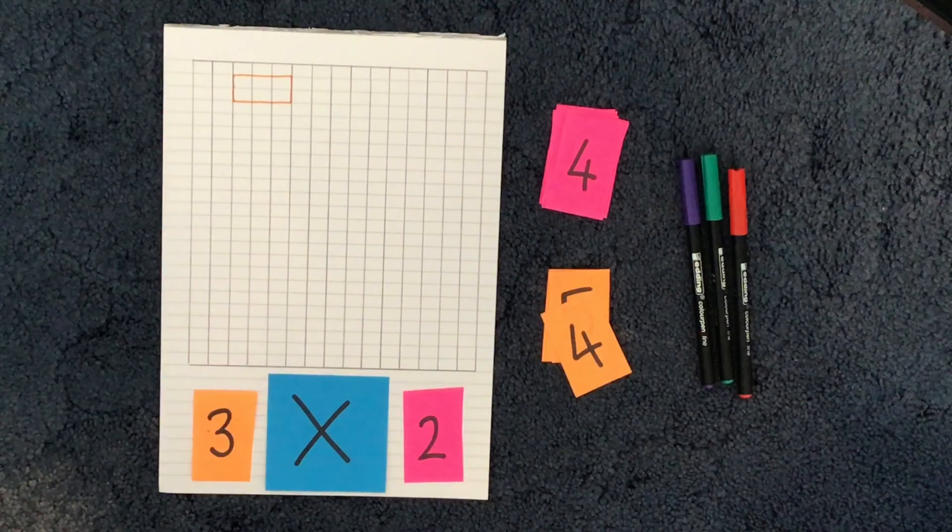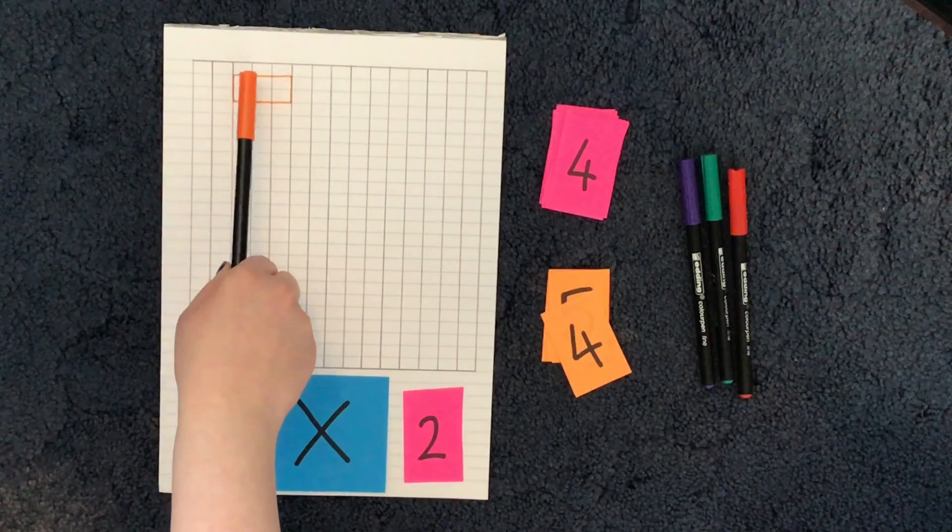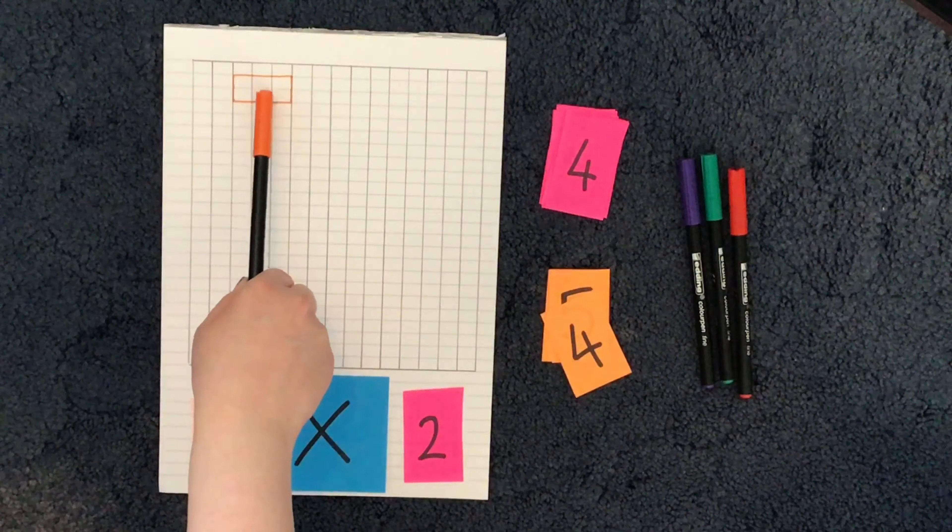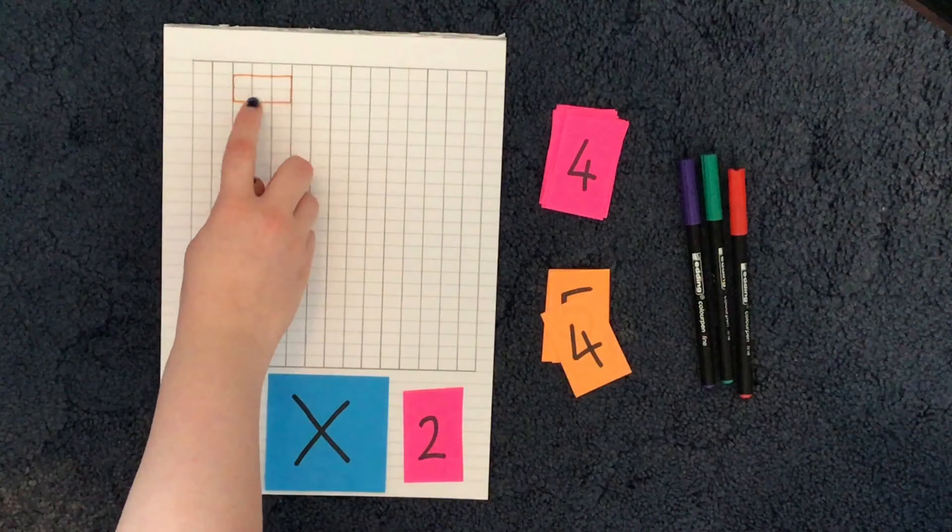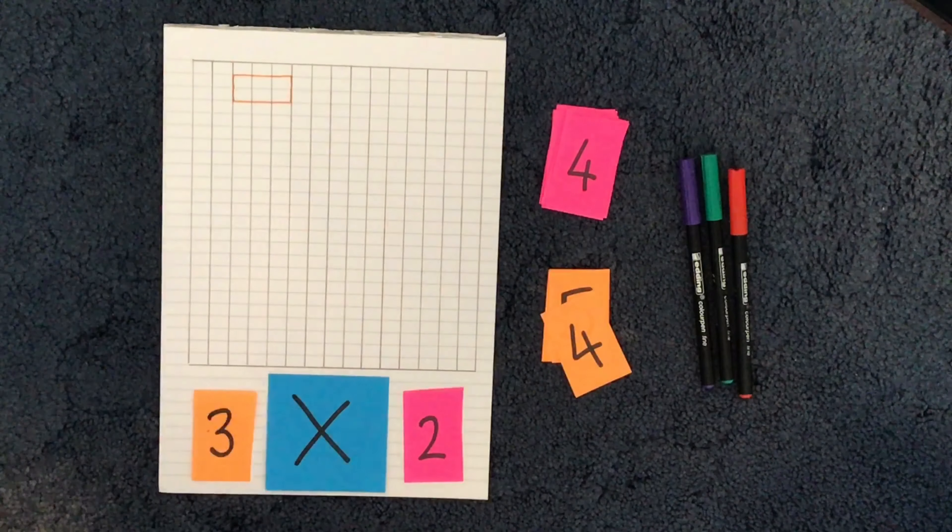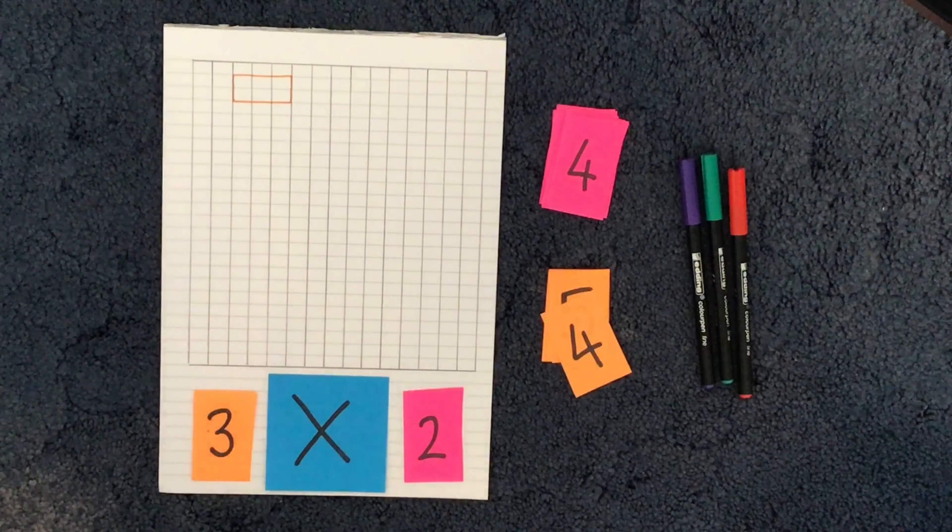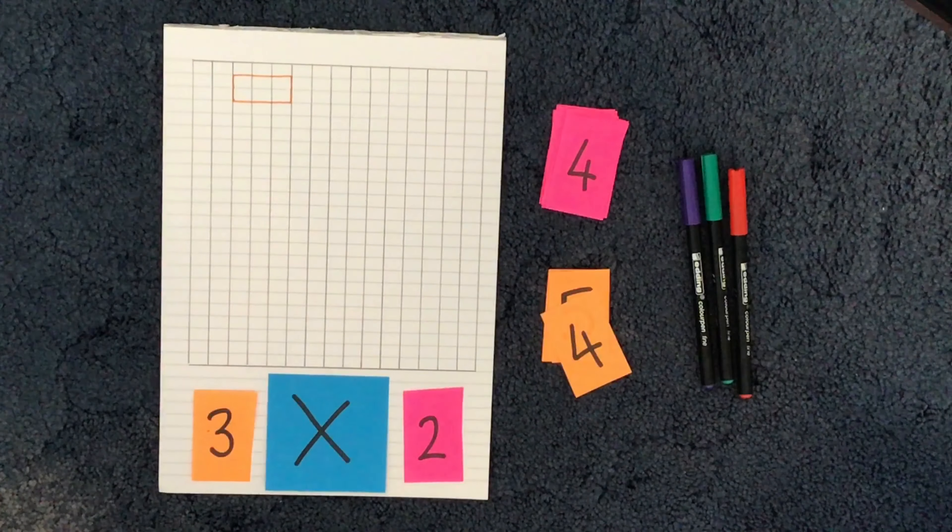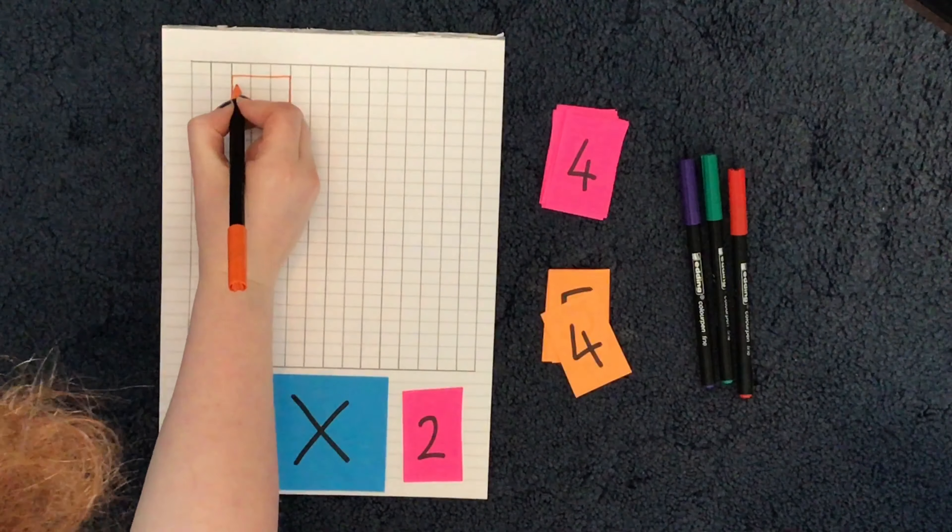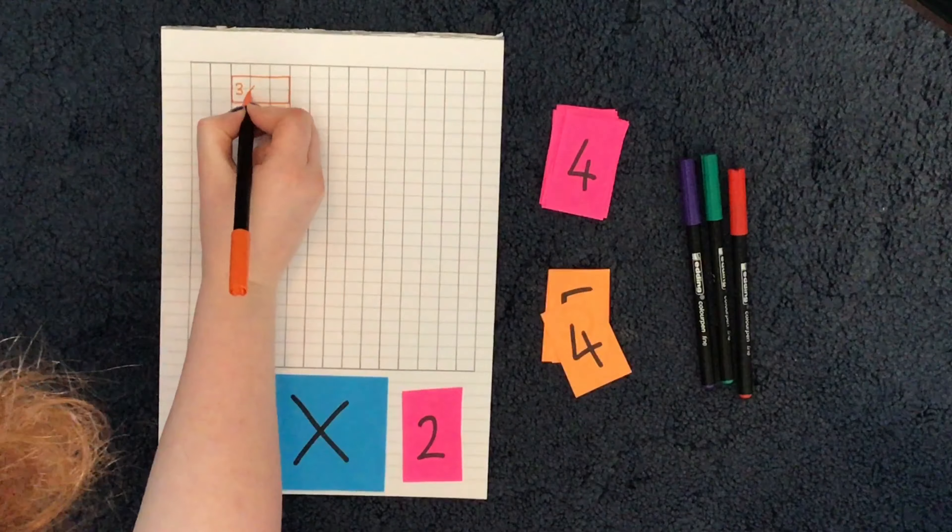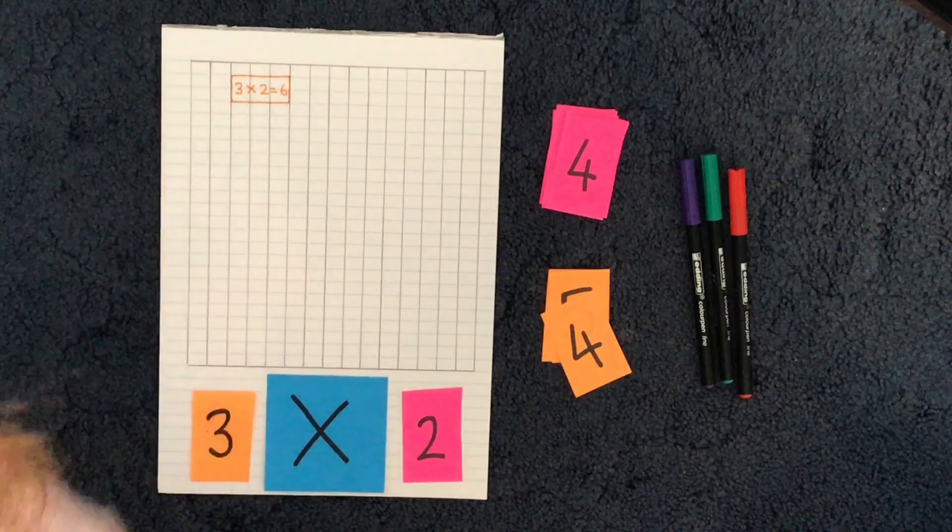So if I wasn't sure what 3 times 2 was, one way to work this out now would be to count the squares or the rectangles inside my grid. So I'm going to do that: 1, 2, 3, 4, 5, 6. So that would help me to work out that 3 multiplied by 2 equals 6. And then to make sure that I can remember that, I'm going to then write that in my grid. So 3 multiplied by 2 equals 6.